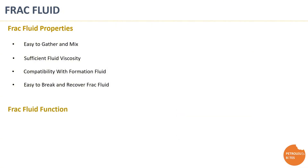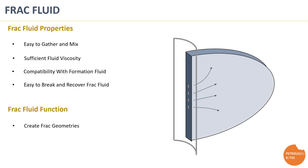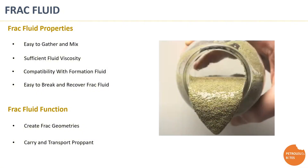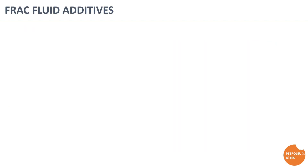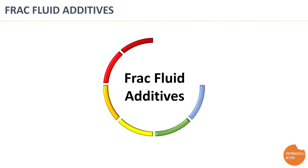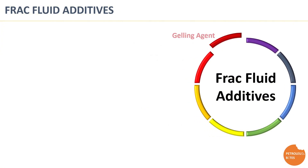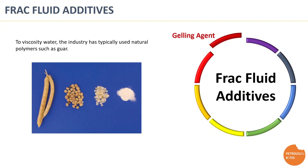The frack fluid has two main functions: first, to create frack geometry and make space for proppant to be placed; and second, to carry proppant and transport it from surface down into the created frack in the reservoir rock. The frack fluid consists of several additives that give the system the unique properties of high viscosity, less formation damage, stability at high temperature, and low friction pressure loss during pumping.